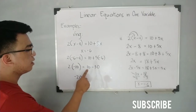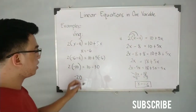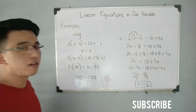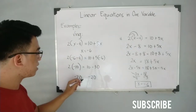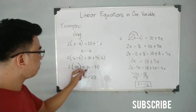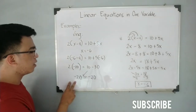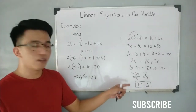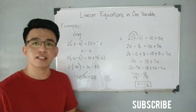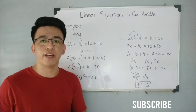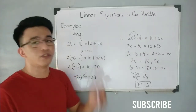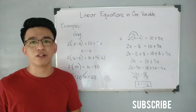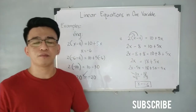Simplifying the right side: 10 minus 30 is equal to negative 20. Both sides equal negative 20, so they are equal. This confirms that x equals negative 6 is indeed the correct value that satisfies the given equation. That's how you check whether your answer is correct.